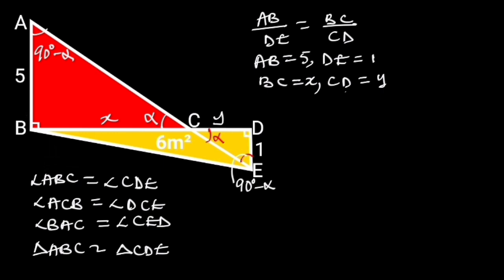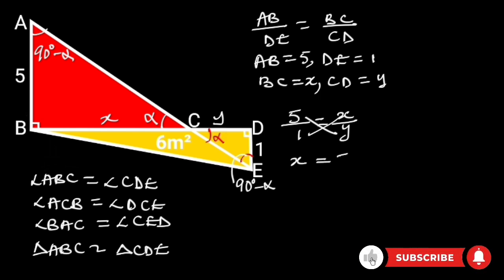Substituting these values in the above equation will give us 5 over 1 is equal to X over Y. By cross multiplication, we will have X is equal to 5Y. Let's call this equation 1.